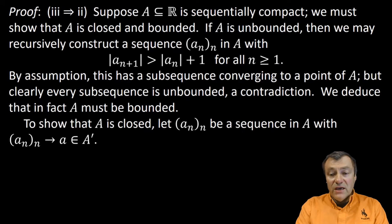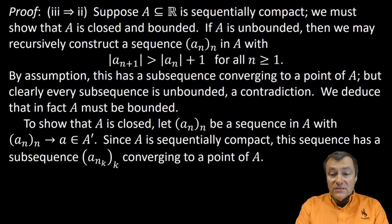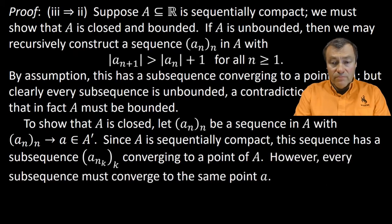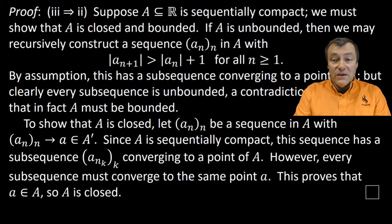Now, let's show that capital A is closed. Here, we want to show that capital A contains all its limit points. Let AN be a sequence in the set A converging to a limit point little a. Since the set A is sequentially compact, this sequence has a subsequence converging to a point of the set A. But every subsequence of a convergent sequence must converge to the same point — that point is little a. This means that little a must be in capital A. So, the set A is closed. Case closed.